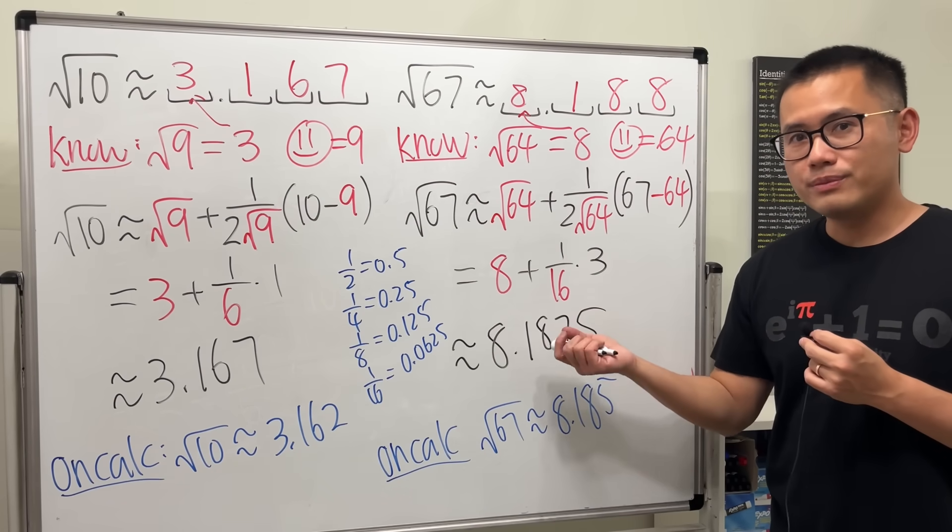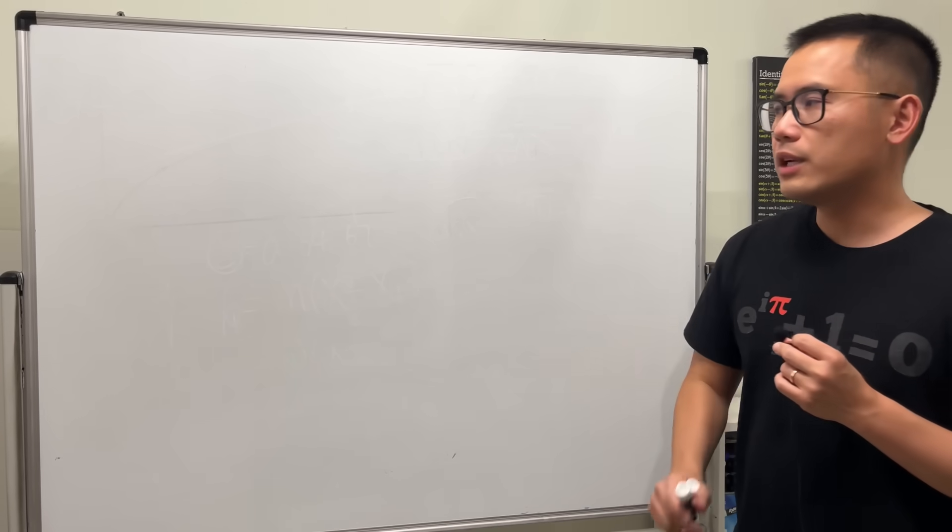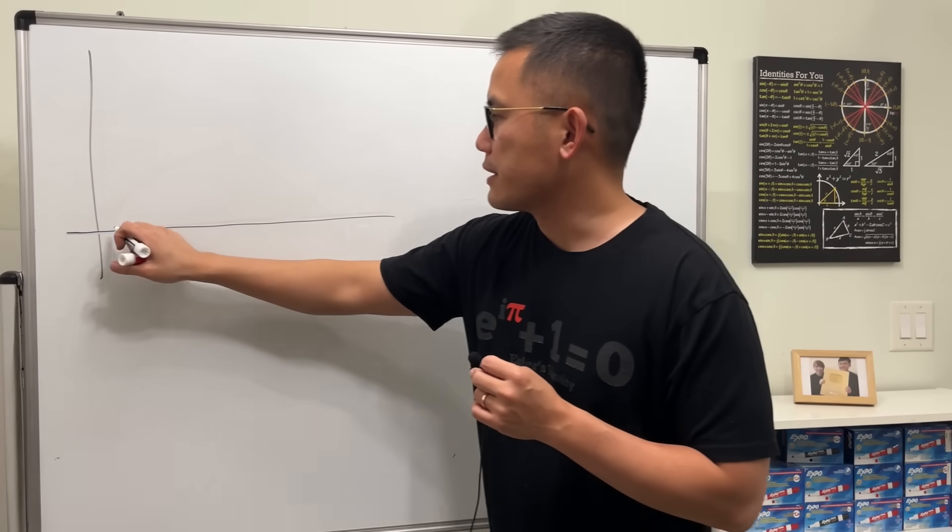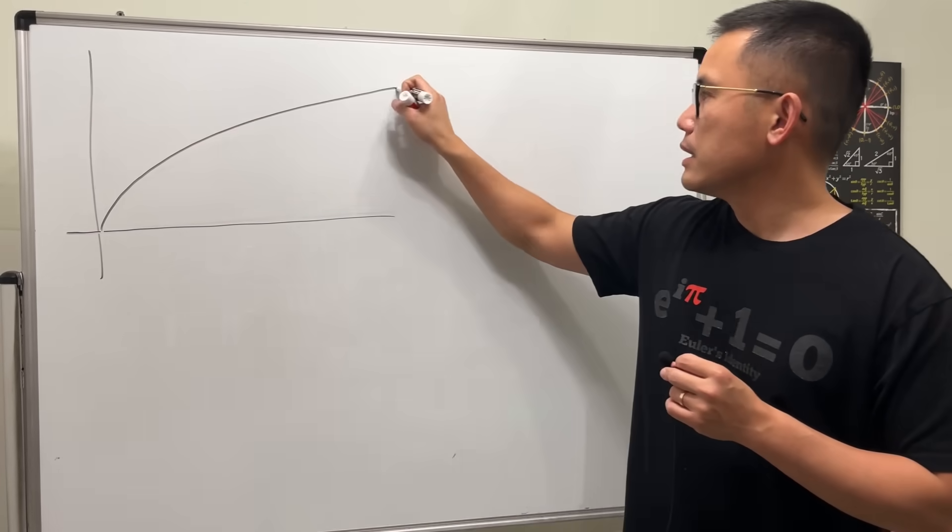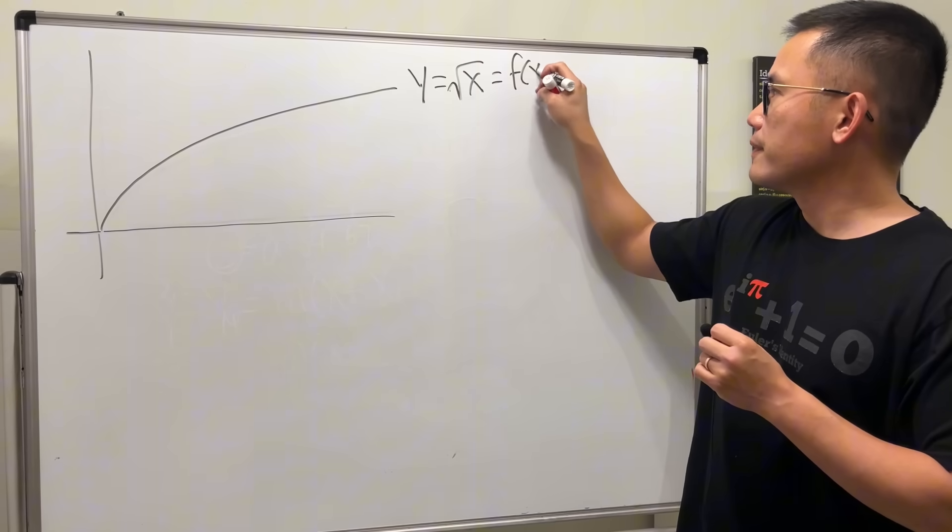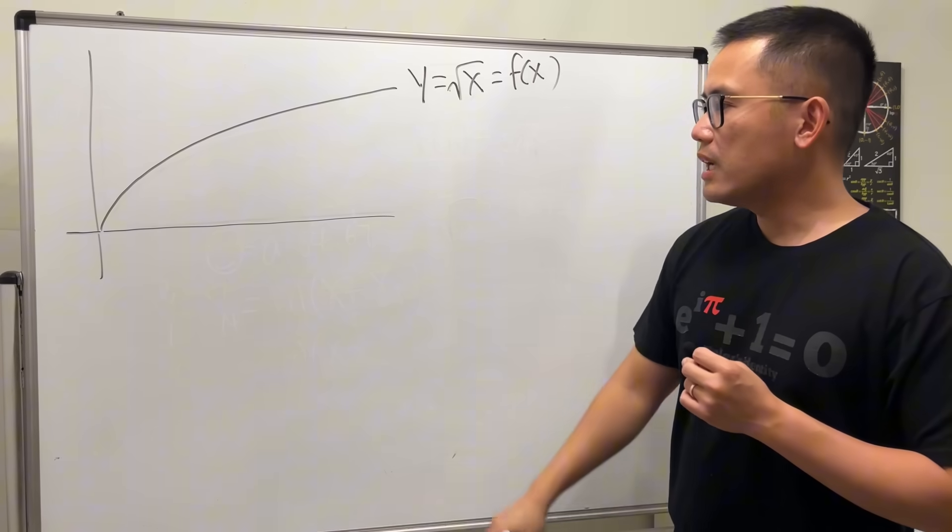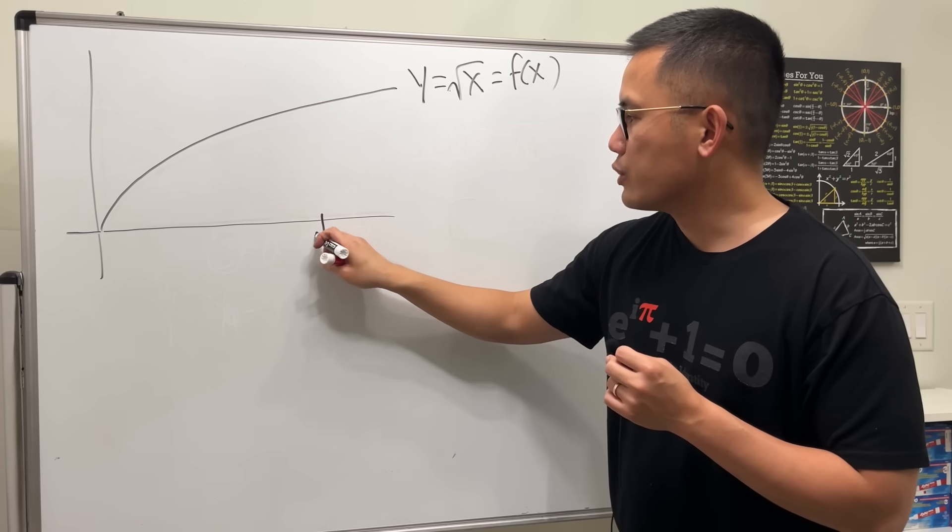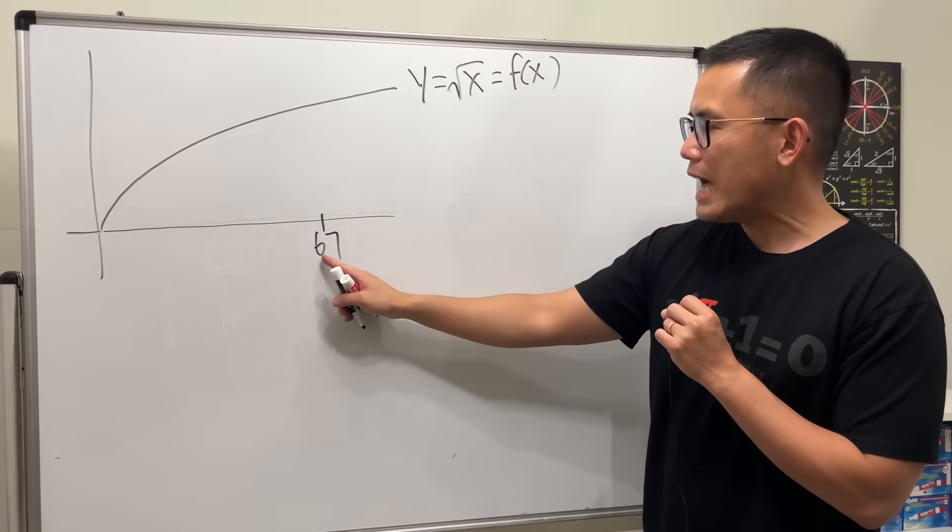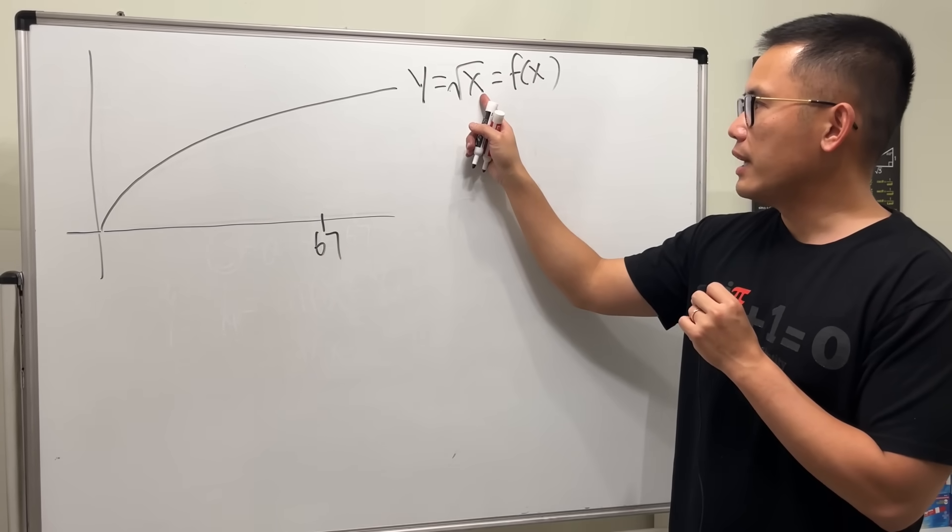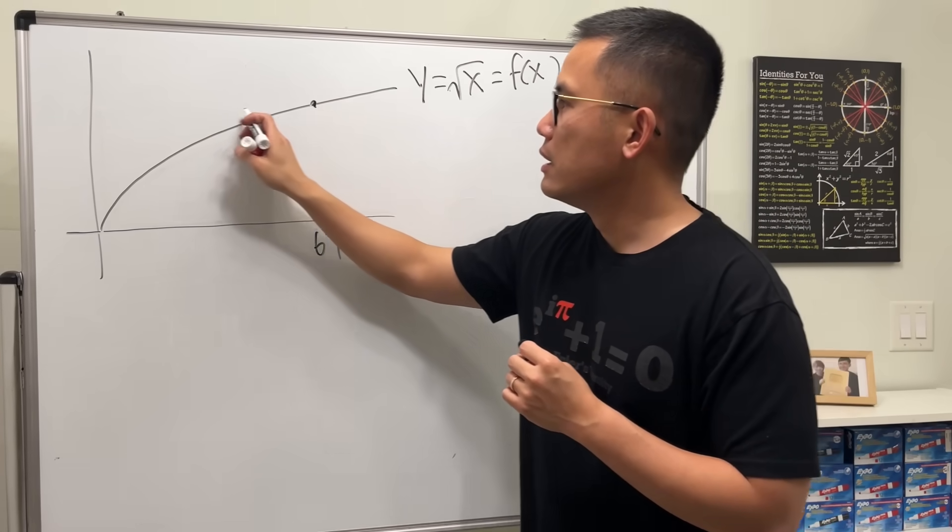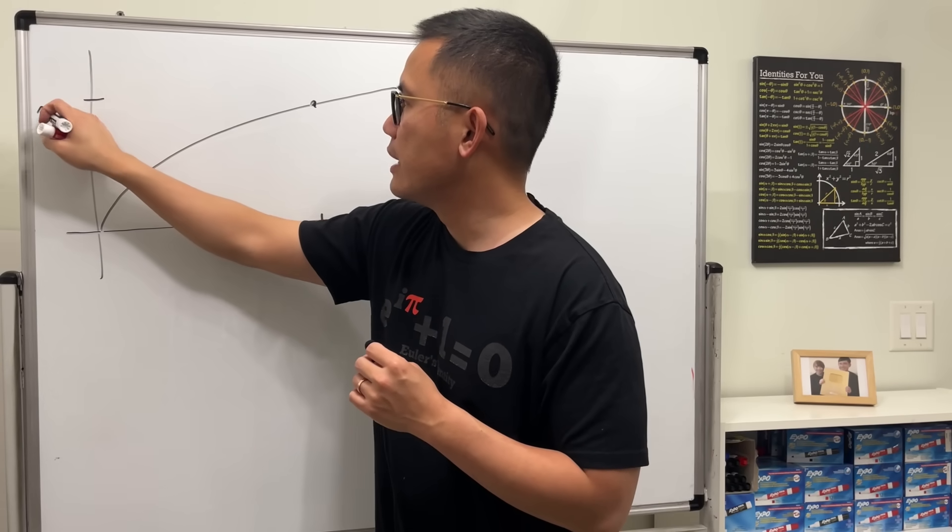Now, why is this true? Let's have a look. Let's take a look at the graph for the square root function, which looks like this. So this is y equals square root of x. And this is our function. Now, let's say we were trying to figure out square root of 67.